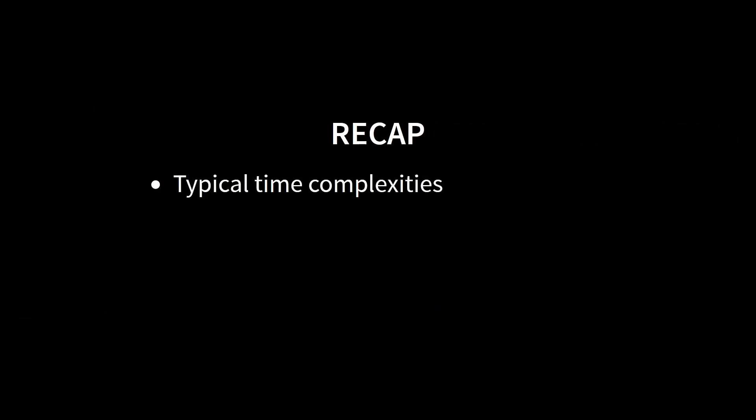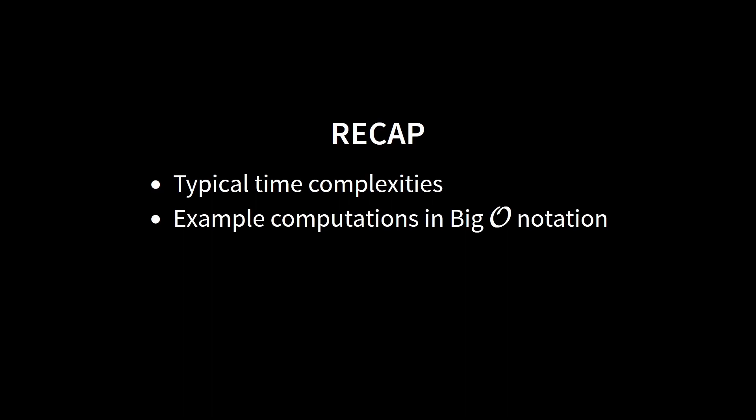Let's recap. In this video we looked at typical time and space complexities such as logarithmic, superlinear, or exponential, and tried to get an intuitive sense of what these complexities mean in practice. We did a few example calculations in big O notation. We discovered that there are other ways to specify the growth of functions besides big O notation, and that sometimes these are more appropriate. And finally, we cleared up some misconceptions about big O notation. In the next video, we will look at the first simple algorithm that can be very useful in practice: binary search. I will see you in the next video.